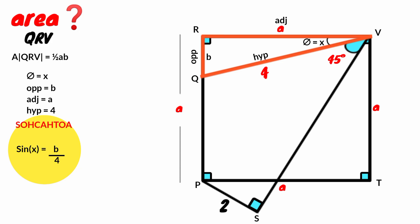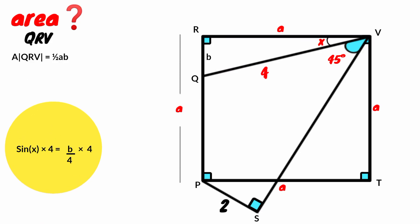So sine X equal to B over 4. Therefore B equal to 4 sine X. We keep it aside.